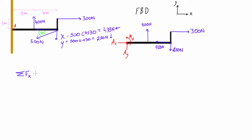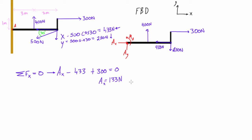Let's solve the sum of forces in the X direction. For static equilibrium that sum must equal zero. We have Ax in the positive X direction, minus 433 newtons going the other way, and plus 300 newtons in the positive X direction — all equal to zero. Simplifying for Ax, we move the other terms to the other side and find Ax equals 133 newtons. We got a positive answer, which means the direction we assumed was correct.